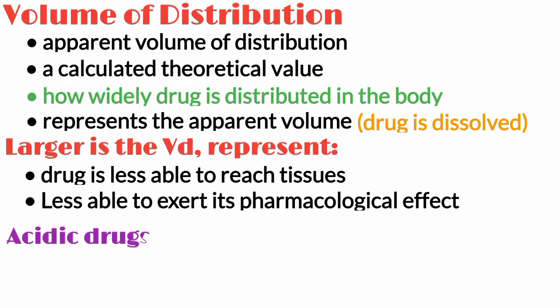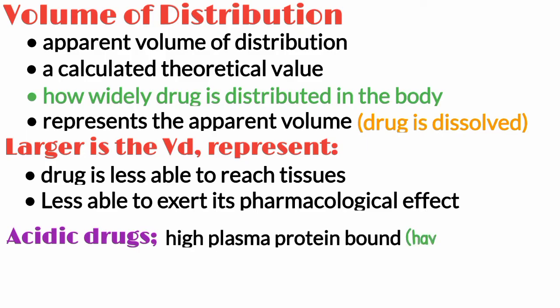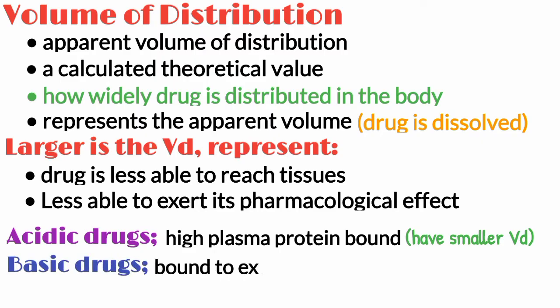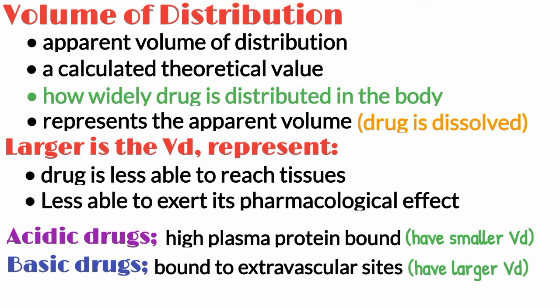Usually, the acidic drugs which are plasma protein bound have a smaller volume of distribution. The basic drugs that are bound to extravascular sites extensively, comparatively, have a larger VD.